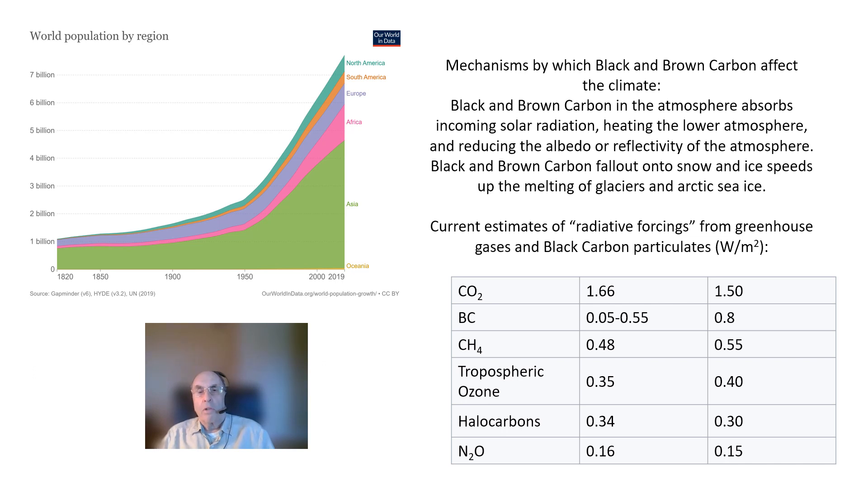Another major contribution of these particulates to climate change comes from their fallout onto snow and ice. These dark particles reduce the amount of reflection from glaciers and sea ice, speeding up melting.